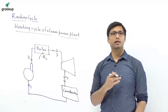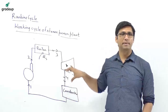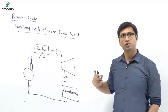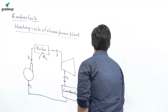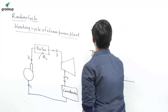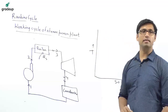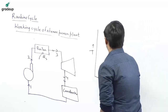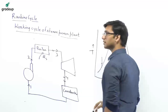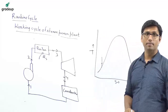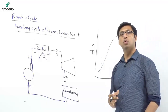There is a feed pump, feed water heater. There are some other components also that we will discuss today. This is the schematic diagram of a steam power plant with four components. If you have to represent the Rankine cycle on a temperature-entropy diagram, how will we represent it?